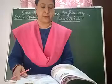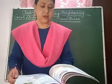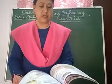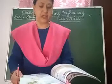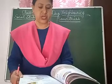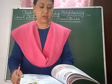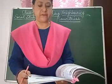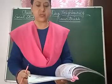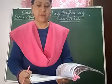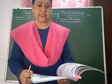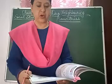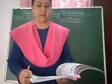Myanmar — Republic of the Union of Myanmar. Location: located in East Asia, Myanmar has a coastline on the Bay of Bengal. Bangladesh and India are to its west, China to its north, and Laos and Thailand to its east. Area: 676,578 square kilometers. Population 2018: 54,017,603. Capital: Naypyidaw.